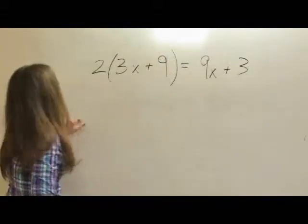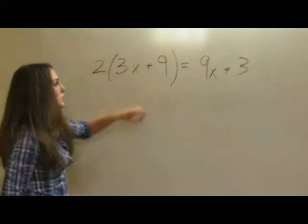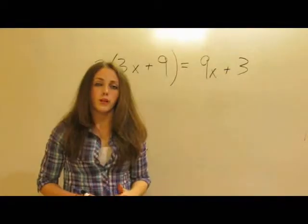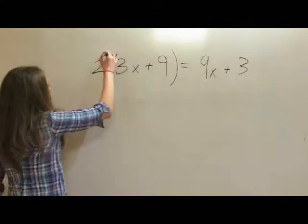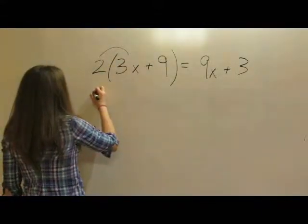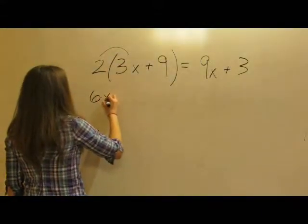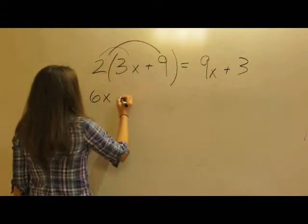However, over here you can see we have 2 times 3x plus 9. We can simplify this by multiplying 2 by everything in the parentheses. So let's do that. We have 2 times 3x which gives us 6x and then 2 times 9 which gives us 18.